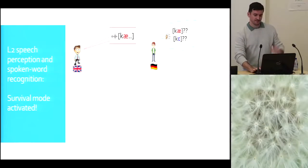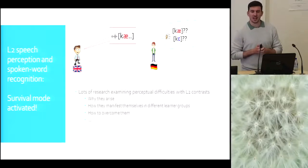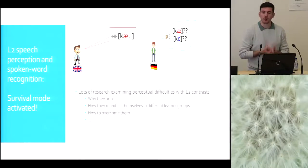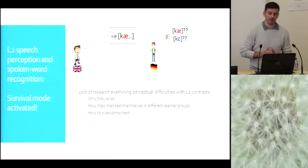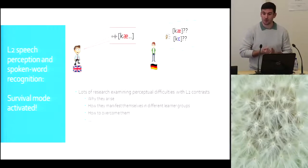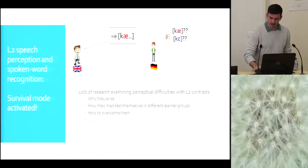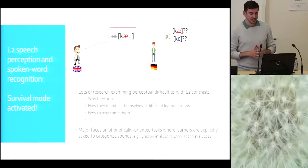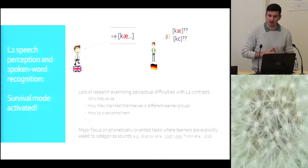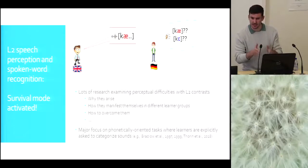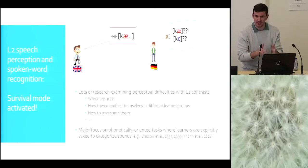If we look at these two levels, there's lots and lots of research examining perceptual difficulties with L2 contrast in this more purely perceptual level. We know a lot about them. We know why they arise, how they manifest themselves in different learner groups, and we know quite a lot too about how to overcome them using training, using instruction. But in this kind of research, the major focus is on phonetically oriented tasks where learners are explicitly asked to categorize sound. This does really zoom in on the sound level. Is this eh or ah? Make a decision. Listen to the vowel.